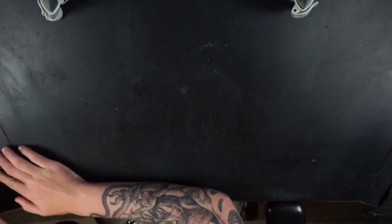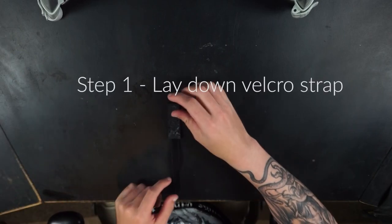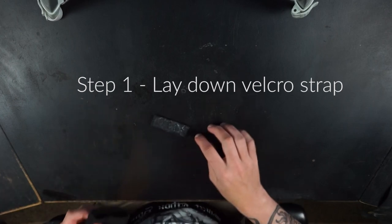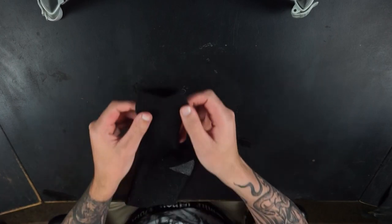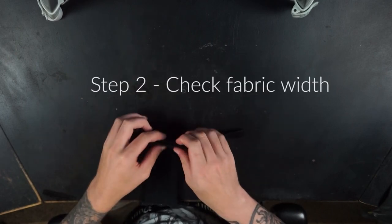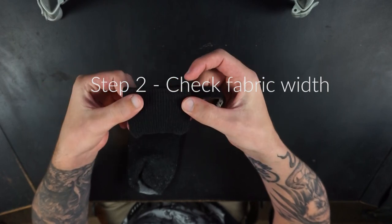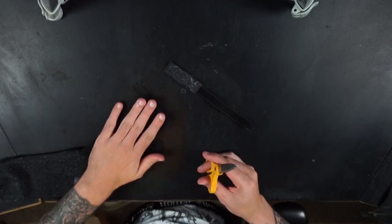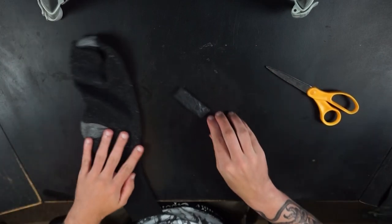So first thing that you want to do is lay out your velcro strap that you have. We're going to do this just so we can make sure that the fabric that we have is the correct width. In this case the sock that I have is the perfect width for it. You might have to do a little bit more modification, but luckily for me it lines up perfectly. So what we want to do now is lay out our fabric, grab a pair of scissors, and what you're going to want to do is fold it over two times.